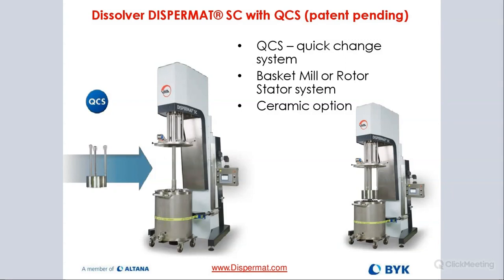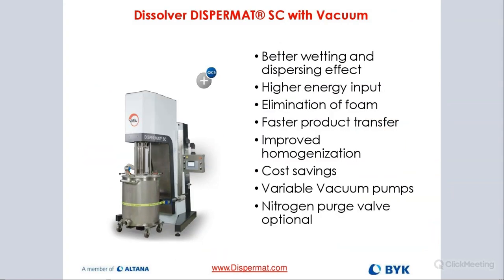Ceramics are definitely more expensive, but in some instances it's an absolute must. New end-use markets like batteries and fuel cells cannot have any cross-contamination with any type of metal, so they need ceramic or non-steel components. We also offer container lining in ceramic so the product doesn't get in touch with stainless steel. When milling, it's always important to make sure that baskets are coolable, and containers need to be jacketed double-walled for very efficient cooling of the slurry while milling, as we're putting in a lot of energy that heats up the process very fast.